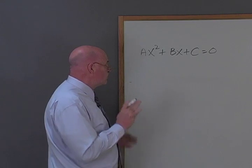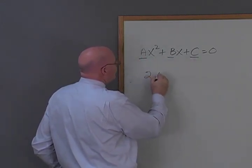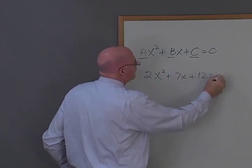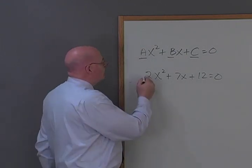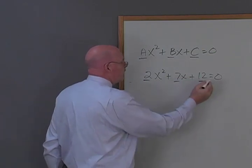So, the first thing we're going to do is recognize that we have three coefficients. We've got an a, a b, and a c. If we had 2x squared plus 7x plus 12, what's the a? A would be the 2. What's the b? 7. What's the c? Very good.